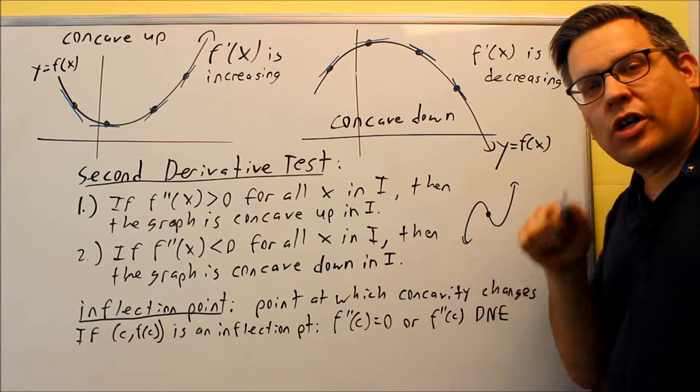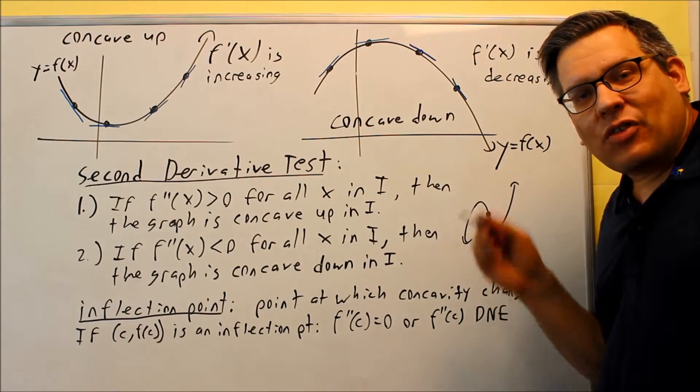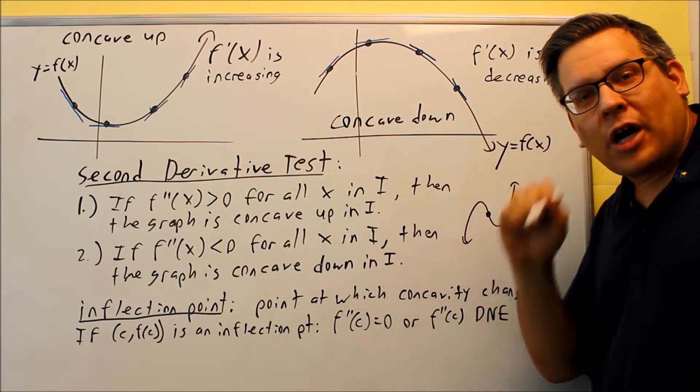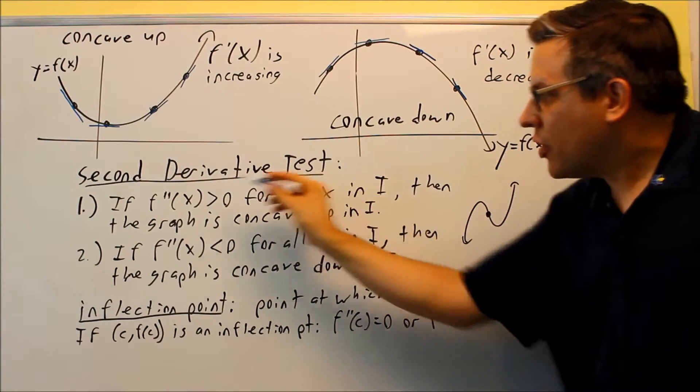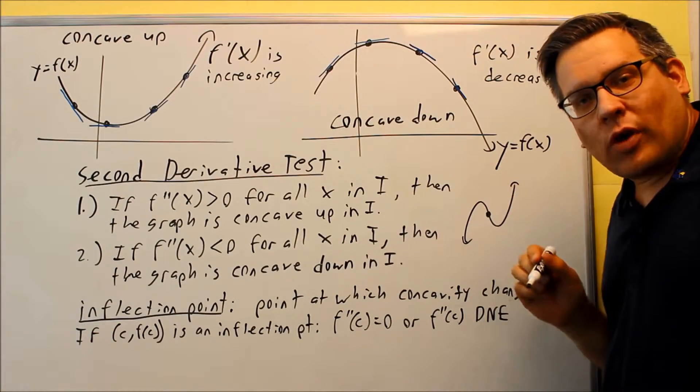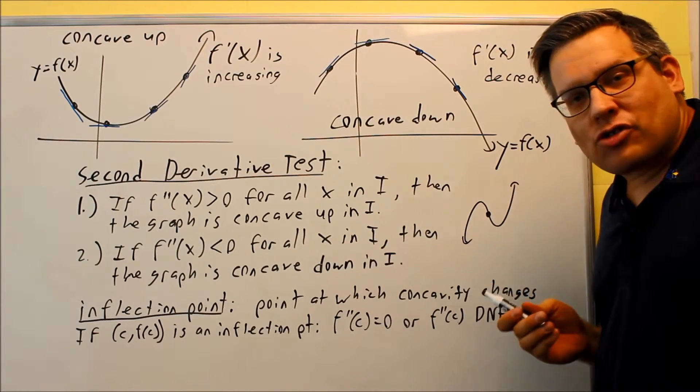So the way that you are going to look for inflection points is when you look at your table that you are drawing, if you see a plus and a minus or a minus to plus on your second derivative chart, that's going to tell you where you have an inflection point.